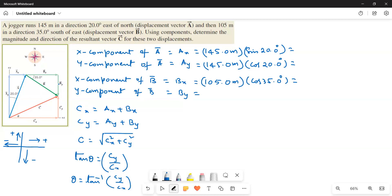And then By value is downward. So negative 105.0 times, this is opposite side, so sine 35 degrees.